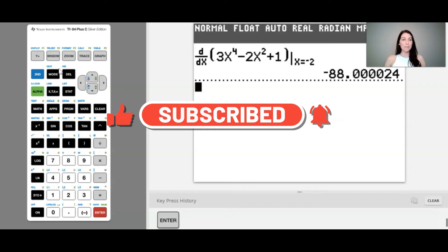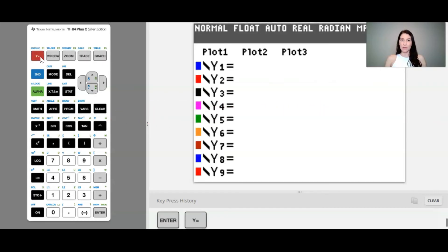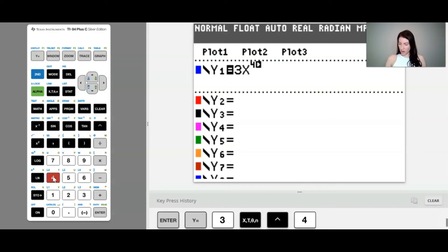Let me also show you another cool way you can find this derivative and that's using the graph of the function. So I'm going to go to y equals. I'm going to type in our same function of 3x to the 4th minus 2x squared plus 1.